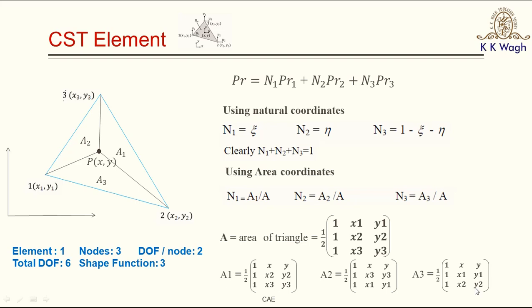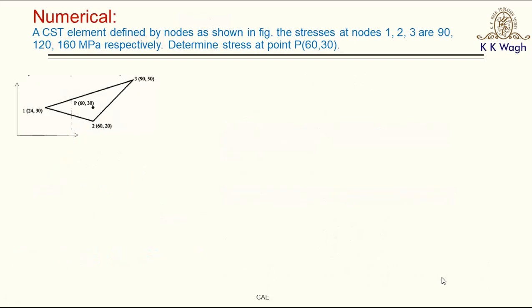Now let's solve a numerical using both methods — natural coordinates and area coordinates. Consider a CST element defined by node 1 at (24, 30), node 2 at (60, 20), and node 3 at (90, 50). The stresses at nodes 1, 2, and 3 are given as 90, 120, and 160 MPa respectively. We need to find the stress at point P located at (60, 30). First we will find the stress at point P using area coordinates.